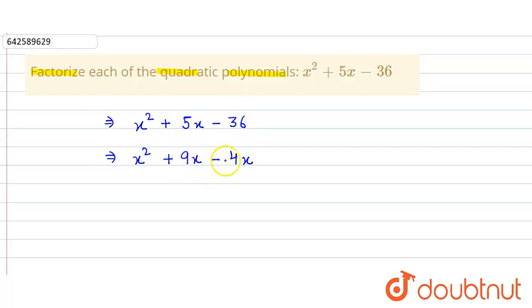This 9 minus 4 equals 5, and then 9 times -4 equals -36, which is this one.